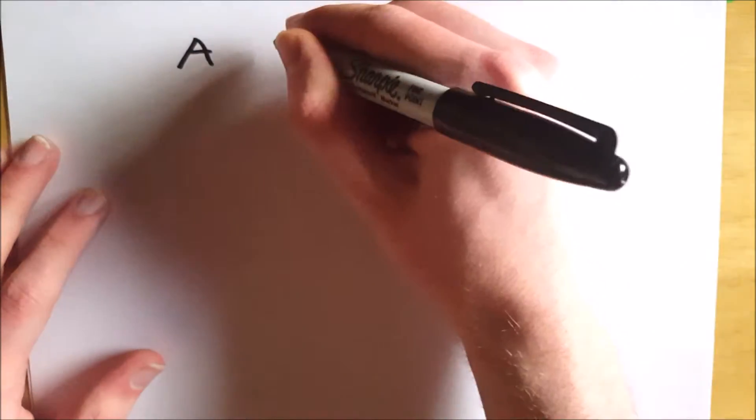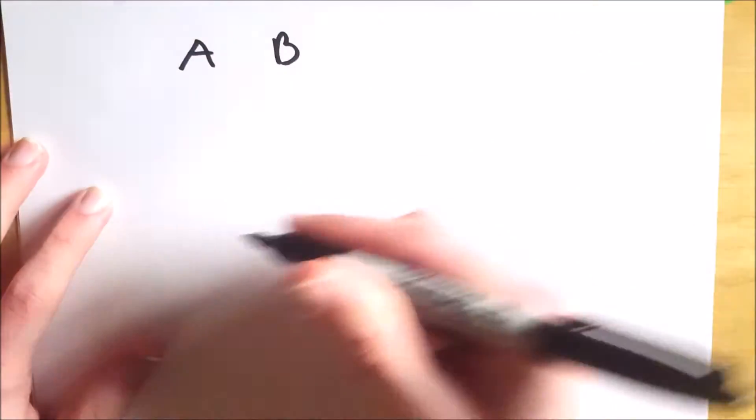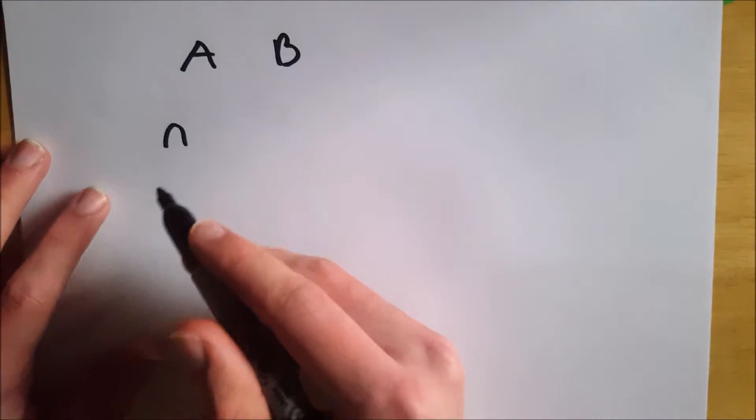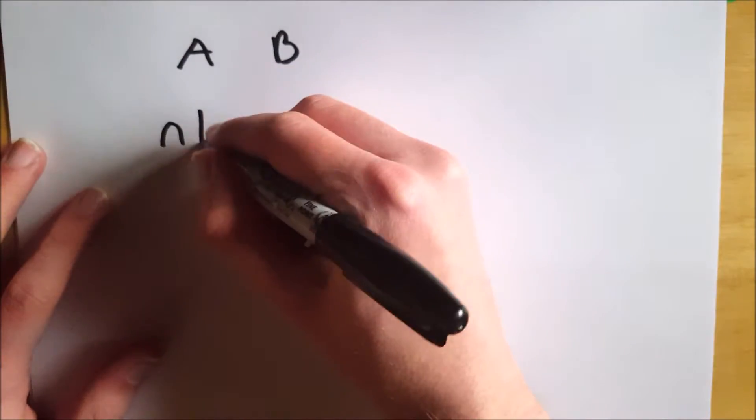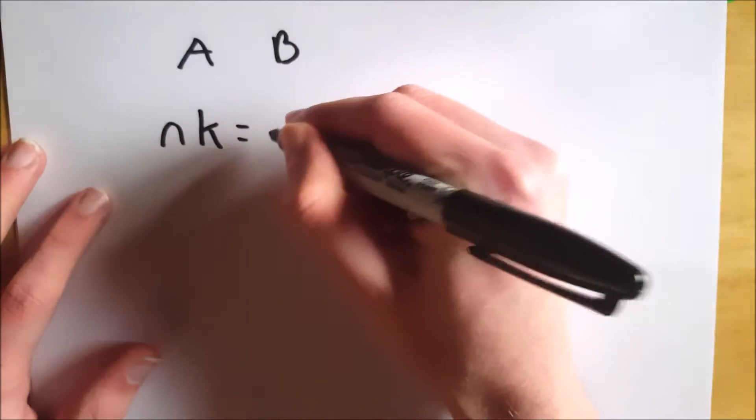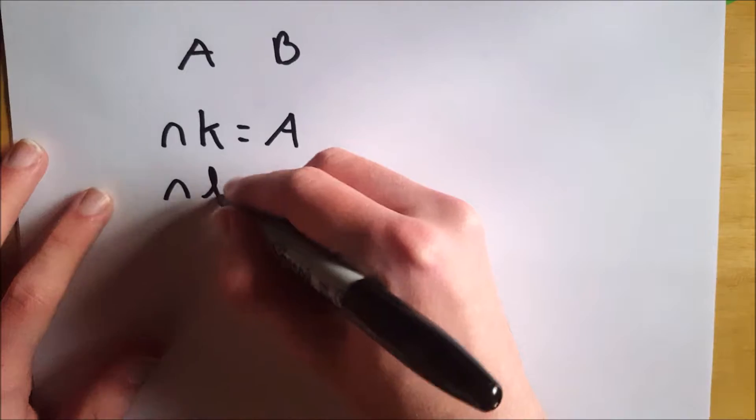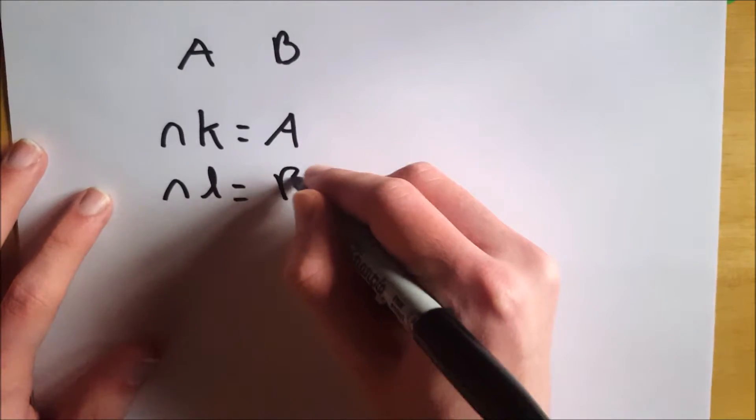So the greatest common factor of any two numbers, a and b, is the number n, such that n is the largest number, so that n times some integer k equals a, and n times some integer l equals b.